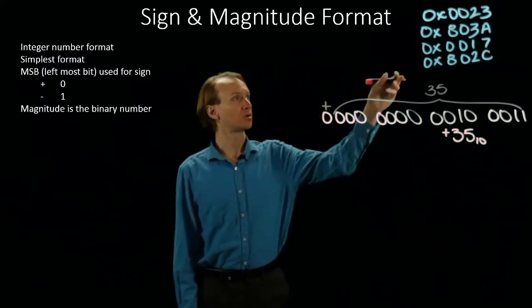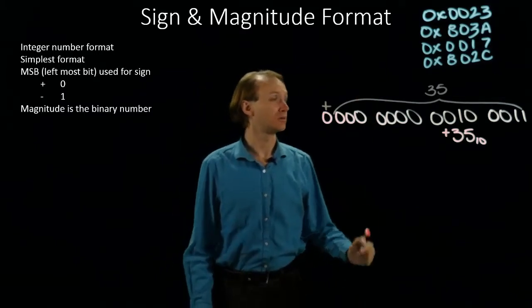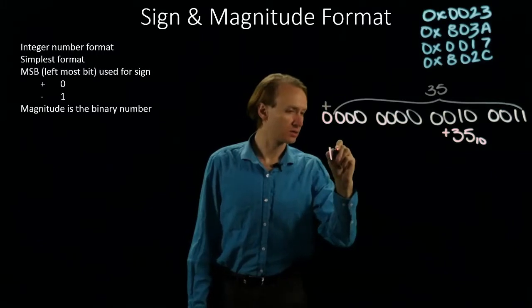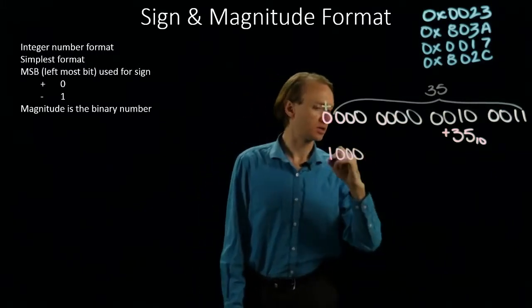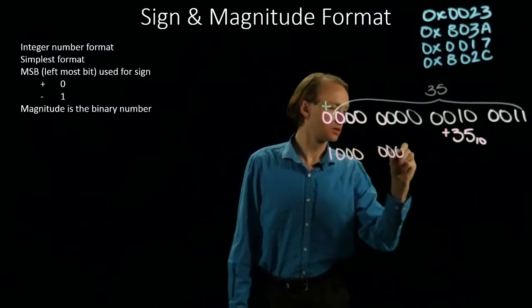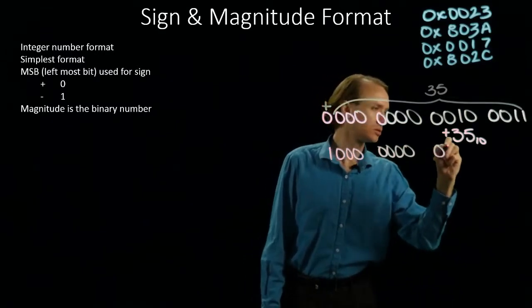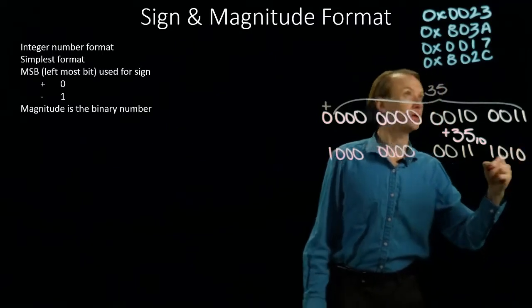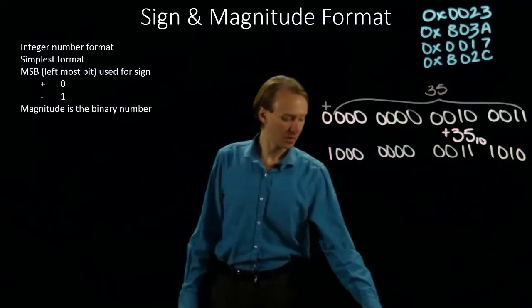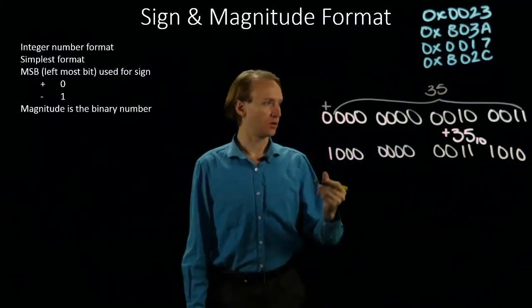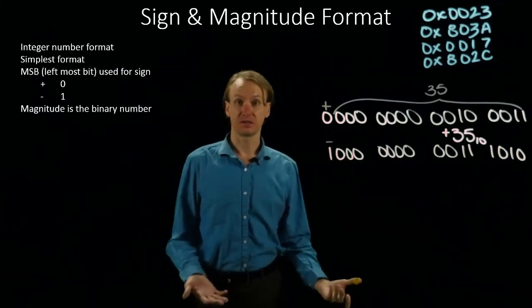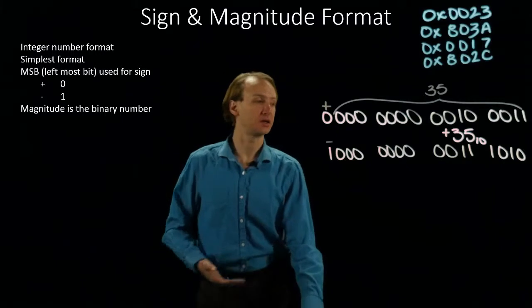The second number is 803a. So if I write that in binary, there's 803a. Our first bit again is a sign bit, and since it's 1, this time this is a negative number.